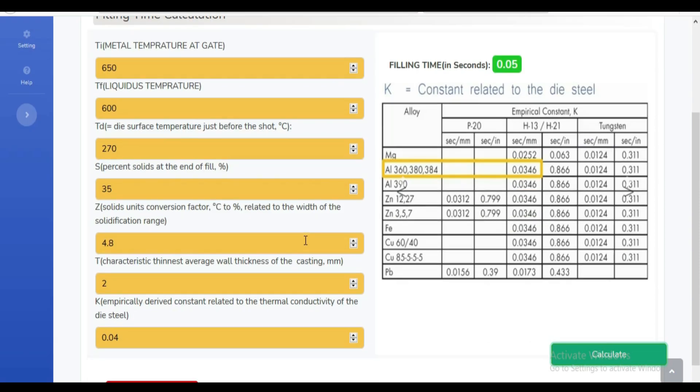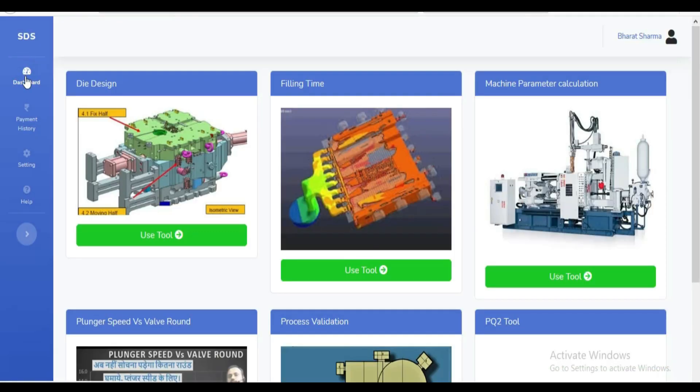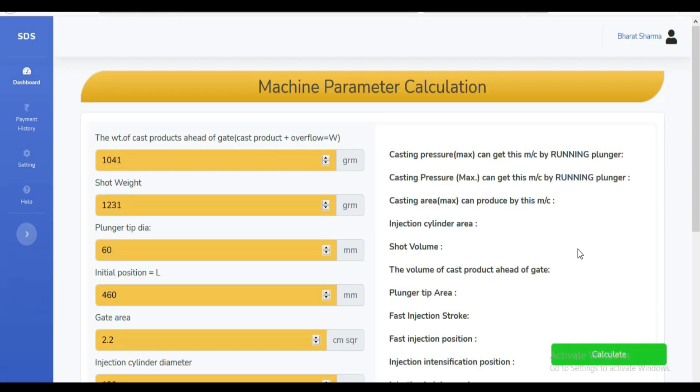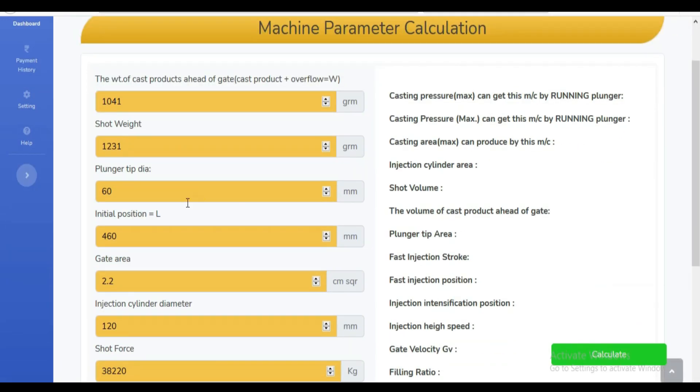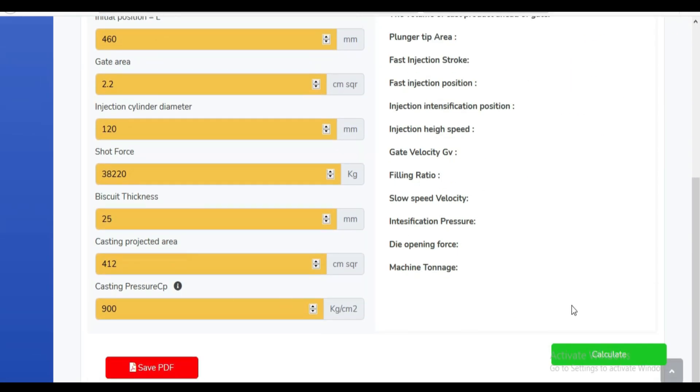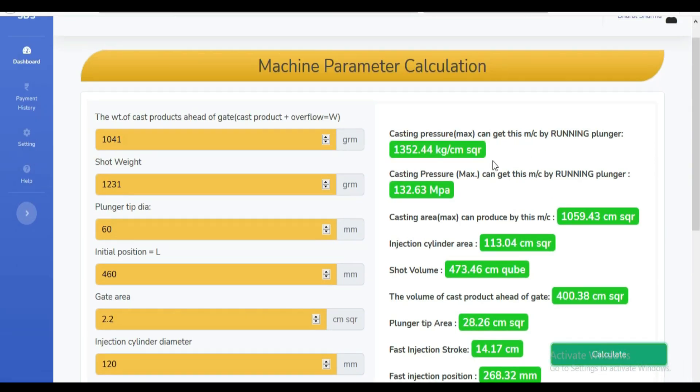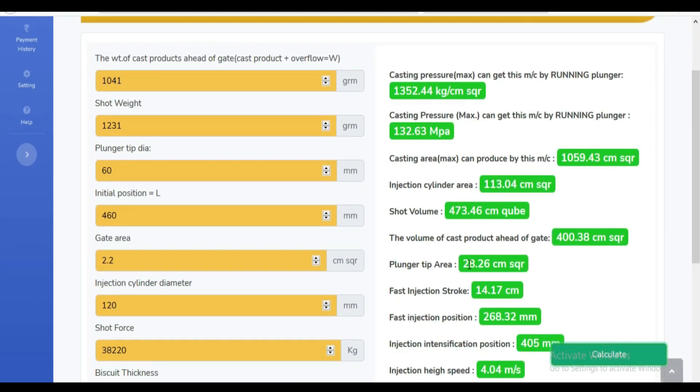The next tool is HPDC machine parameter calculation, through which you can calculate shot volume, fast injection position, intensification start position, injection high speed, injection slow speed, gate velocity, filling ratio, intensification pressure, and many more other important parameters.